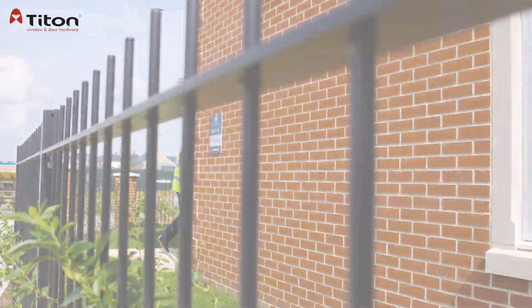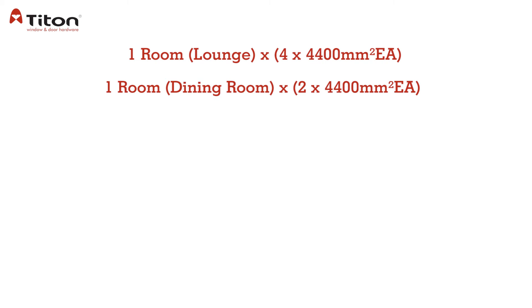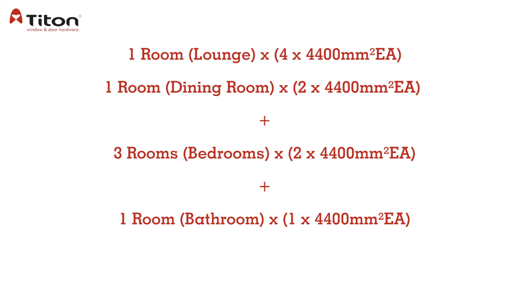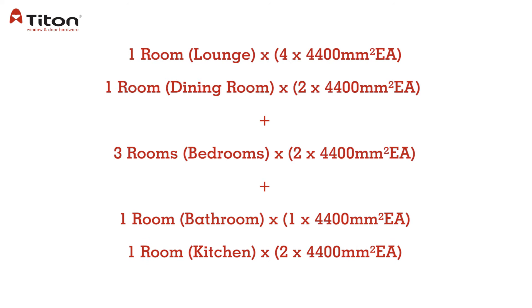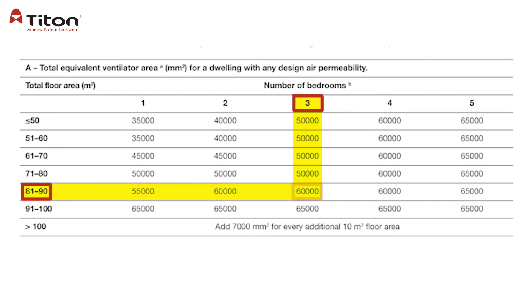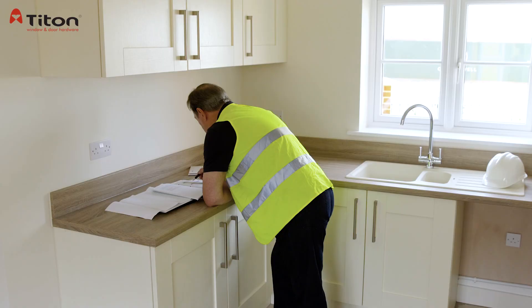In summary, we have 4 vents at 4,400 EA in the lounge and 2 vents at 4,400 EA in the dining room. There are 2 vents at 4,400 EA in each of the 3 bedrooms. In the wet rooms, there is 1 vent at 4,400 EA in the main bathroom, as well as 2 vents at 4,400 EA in the kitchen. This gives a total of 52,800 EA in the habitable rooms and 13,200 EA in the wet rooms, making the total for the property 66,000 mm² EA, which makes the property compliant as we needed at least 60,000 mm² EA. This should now be noted in the Domestic Ventilation Compliance Guide, the DVCG, so it can be submitted.